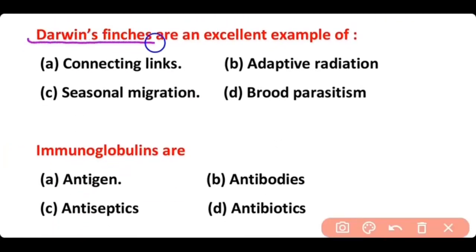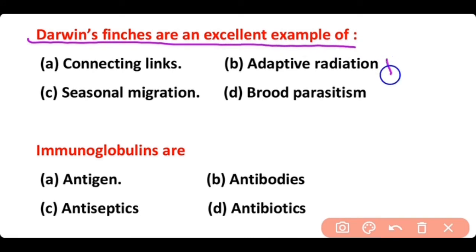Darwin's finches are an excellent example of: connecting links, adaptive radiation, seasonal migration, or brood parasitism. The correct answer is option B. Darwin's finches are an excellent example of adaptive radiation.